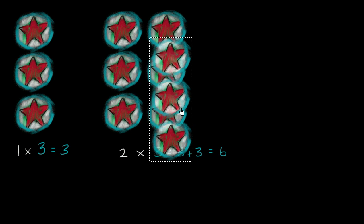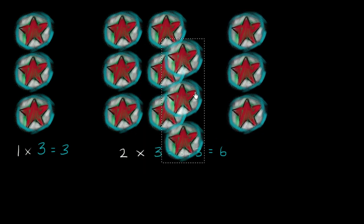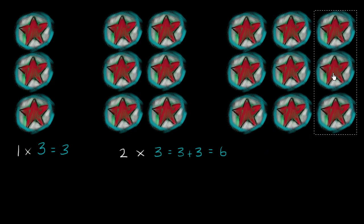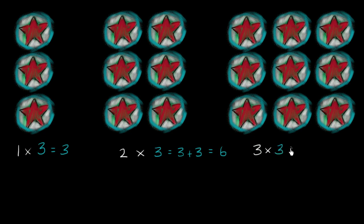Let's make it even more interesting. Let's have three groups of three. What is this going to be equal to? It's three times three, which is the same as three plus three plus three. I have three threes, so three plus three plus three is equal to nine. You can count them: one, two, three, four, five, six, seven, eight, nine. Or you could just count by threes: three, six, nine.